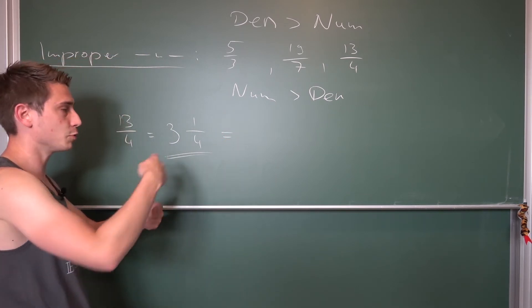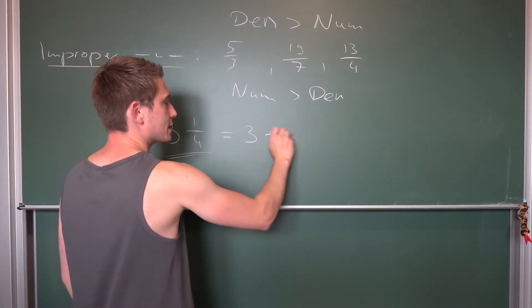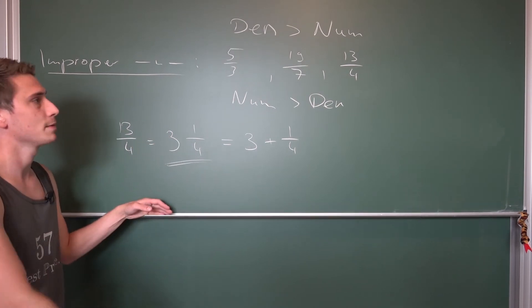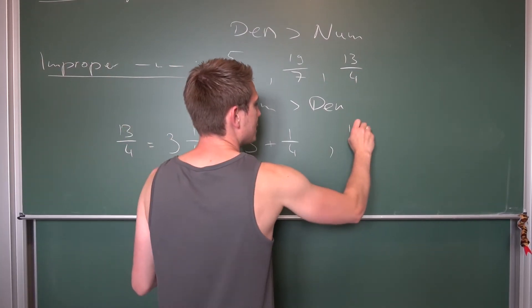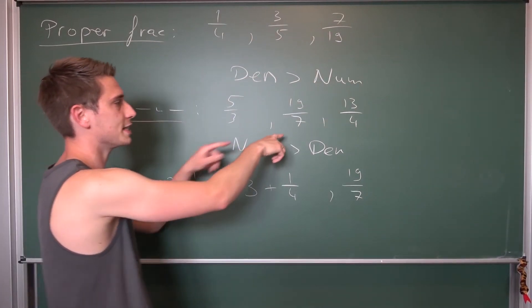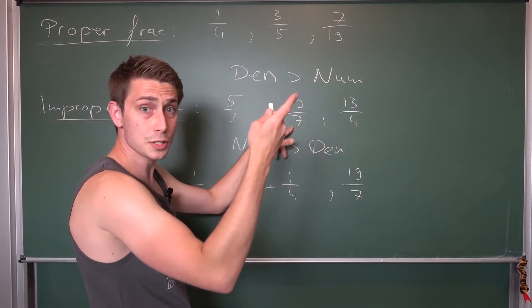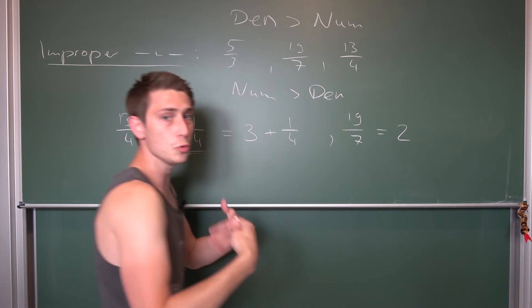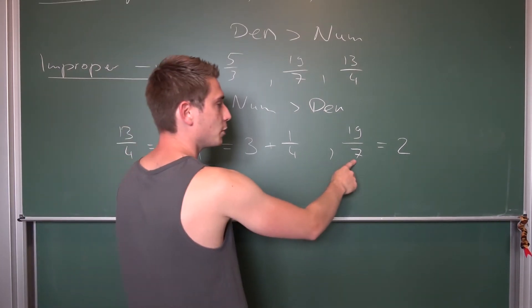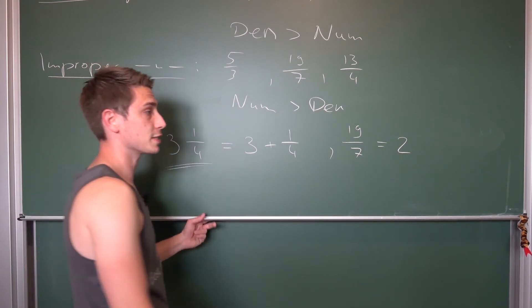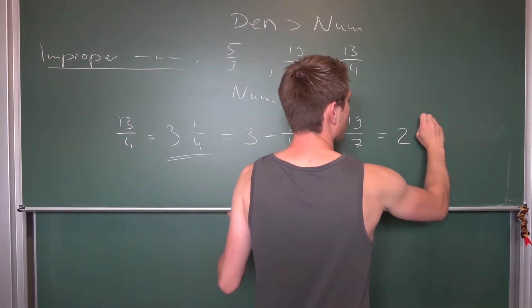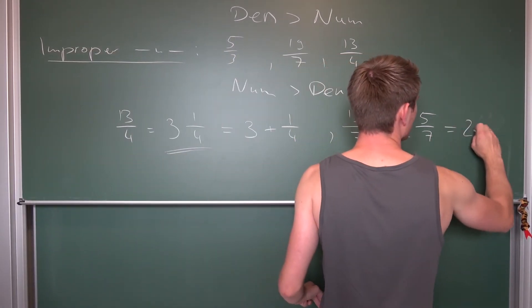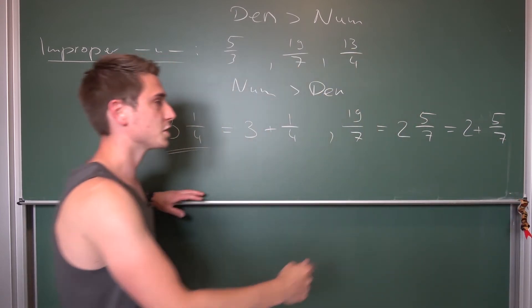And rewriting the mixed fraction basically, we can say that this is 3 plus 1 quarter, just to remember what this notation actually means. We can do it for another example, for example 19 over 7. If we have 19 over 7, 7 fits exactly 2 times into 19, it's going to give us 14. So this is going to give us 2 whole cakes. And how much is left after we placed our 7 into the 19? Well, 5 is going to be left. So this is 5 over 7 in this case. And you can rewrite it yet again, this mixed fraction as 2 plus 5 over 7. So this is the connection basically.